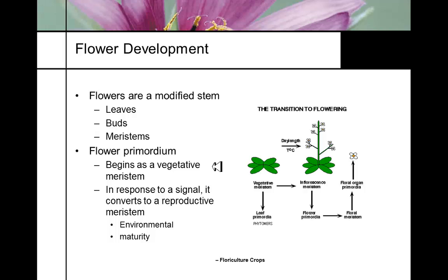Flowers are actually nothing more than a modified stem. A flower has leaves, buds, and meristems. The flower primordium is originally a vegetative meristem, and it relies on a biological signal to change its differentiation patterns to become a reproductive meristem. That change could be environmental — temperature or photoperiod — or it could be maturation, as in annual plants that reach a certain age and will bloom.